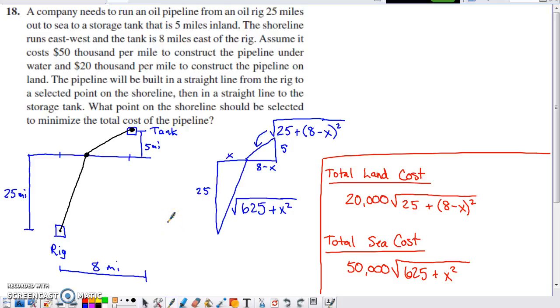This is a pretty involved optimization problem. The situation described is we've got this oil rig out in the water and we've got this tank that's inland, and we want to connect the oil rig to the tank with a pipeline. But the catch is it costs a lot of money to build the pipeline underwater and significantly less money to build the pipeline on land. We don't necessarily want to minimize the length of the pipeline, we want to minimize the cost of its installation.